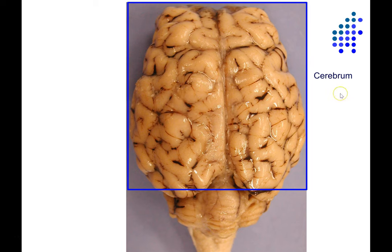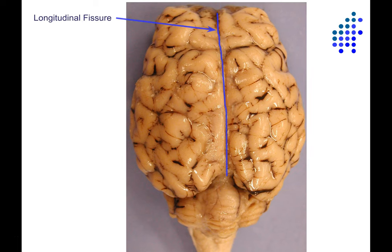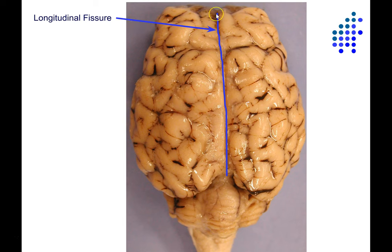The cerebrum is divided into two cerebral hemispheres — the left cerebral hemisphere and the right cerebral hemisphere, shown in the blue box here. The two hemispheres are divided by the longitudinal fissure. A fissure is just a sulcus; when a sulcus is really large and pronounced, we call it a fissure. It's a very deep fold that separates the left hemisphere from the right, running along the whole length of the cerebrum.